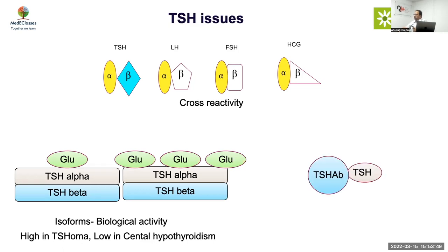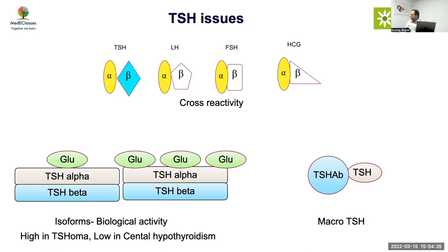TSH can circulate bound to an antibody, causing a problem similar to macro-prolactin. This is called macro-TSH, where TSH complexed with antibody gives a falsely high TSH reading. To correct for this, pegylation can be used — just like for macro-prolactin, a pegylated assay can help identify this situation.